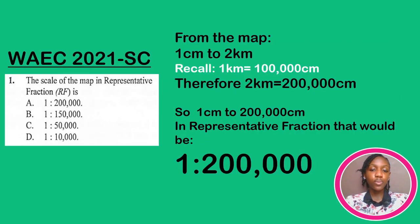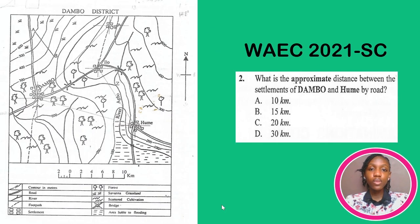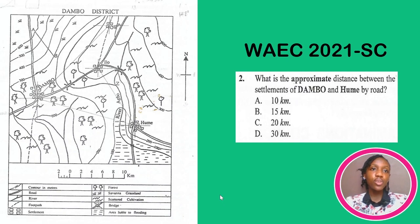Now let's take the next question. Still from WAEC 2021, number two: what is the approximate distance between the settlement of Dambu and Hume by road? Since this question is still based on our previous map, the scale still remains one centimeter to two kilometers, that is 1:200,000 as we calculated. So firstly, we need to identify the settlements. Let's zoom in and do that.